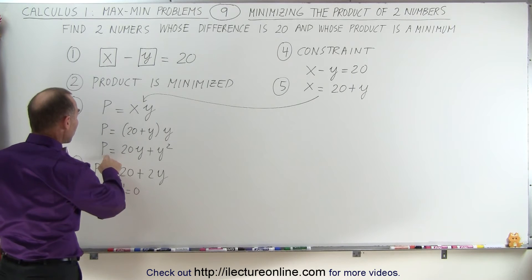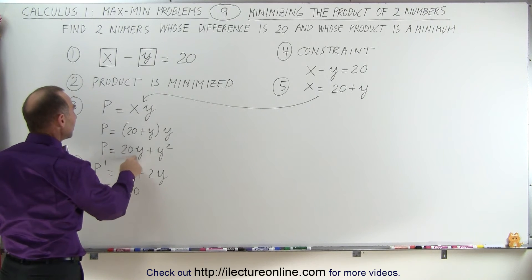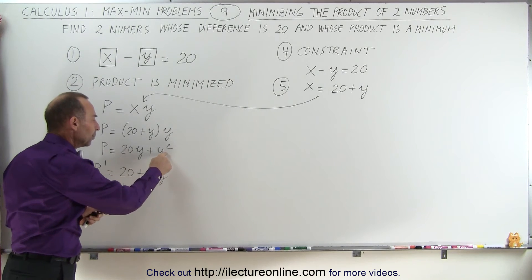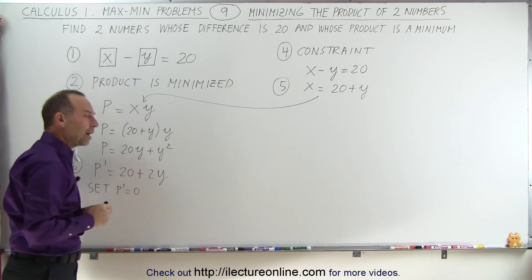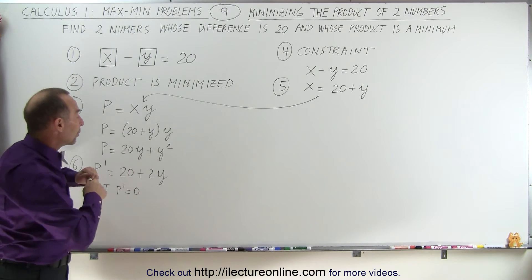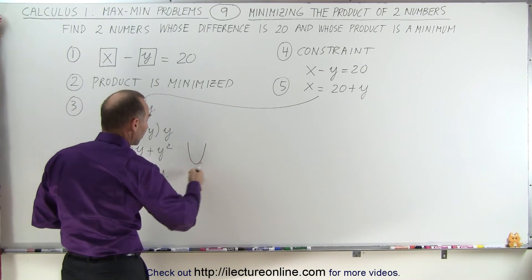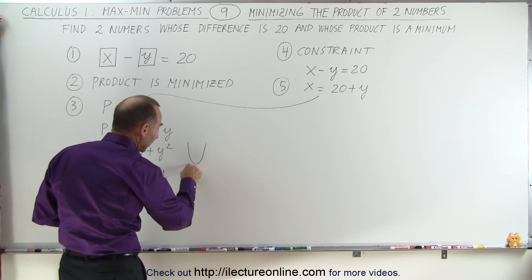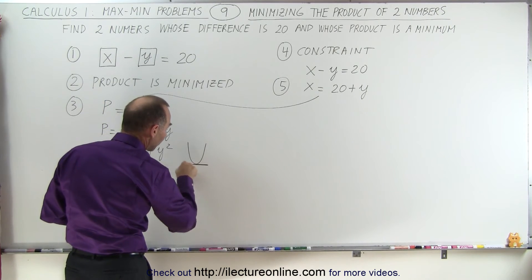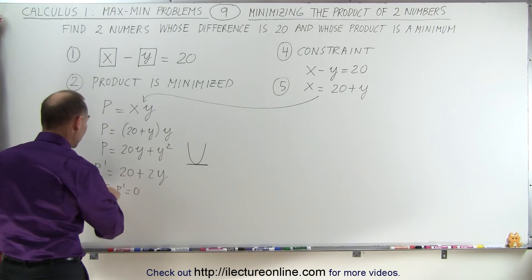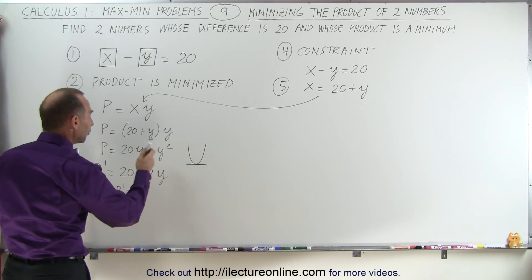Now notice the equation here, P is equal to 20Y plus Y squared. Since the second term or the term to the second power is a positive number, we realize that we're going to get a parabola that opens upward. And since it opens upward, we're going to get a minimum value where the derivative is equal to zero and that's the point we're looking for.